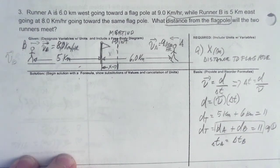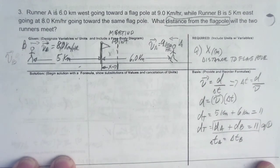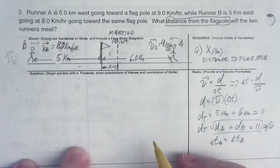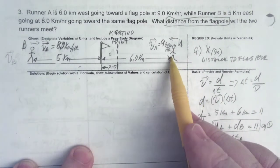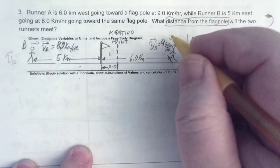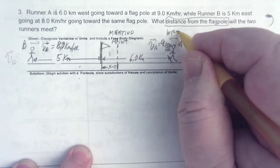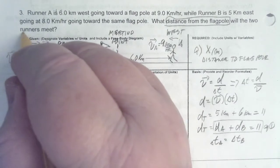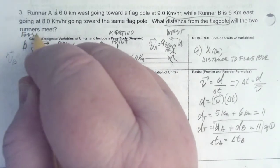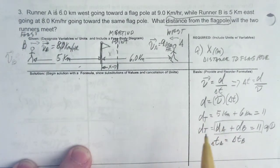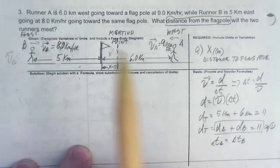Okay, so this is the solution for number three. Here we have two runners. Runner A is going west and runner B is going east. And it's really important that you make a diagram so you'll understand the problem. And it says here that runner A is six kilometers away from a flagpole.